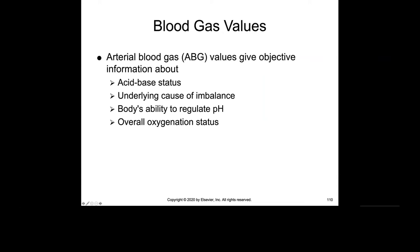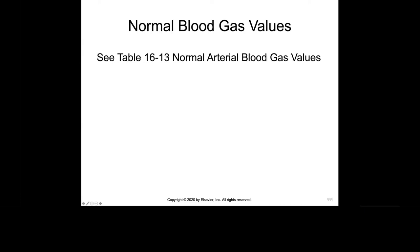Arterial blood gases — blood from the arteries — give objective information about the acid-base status. This is how we check for acid-base imbalances: the underlying cause, the body's ability to regulate pH, and the overall oxygenation status. Table 1613 on page 288 is the table you need to memorize for your pH, your PaCO2 — the acid part — and the bicarb.